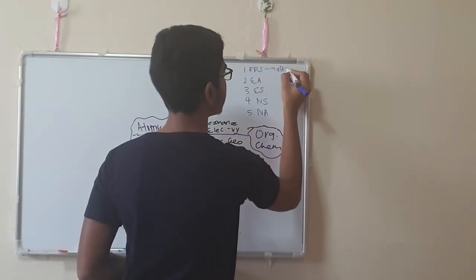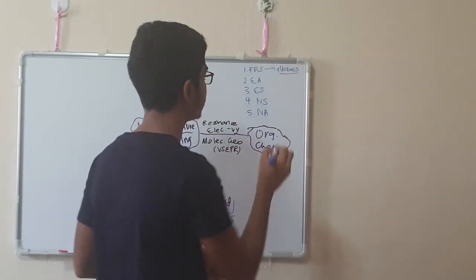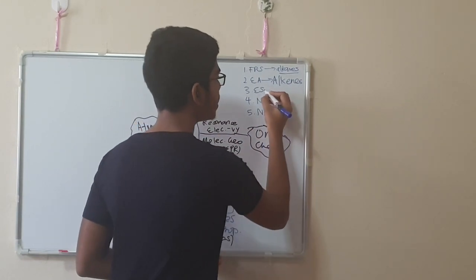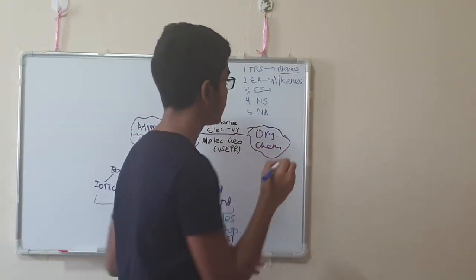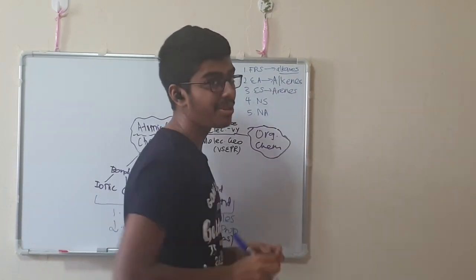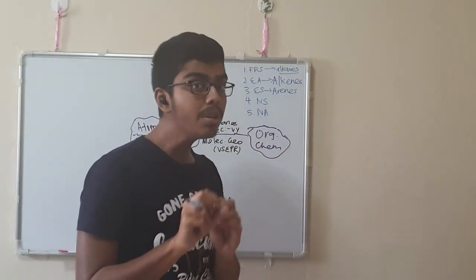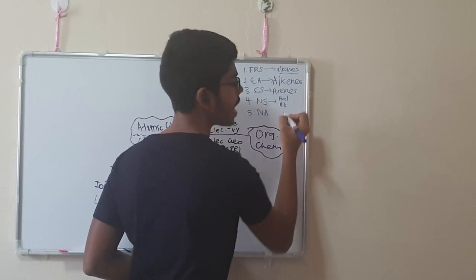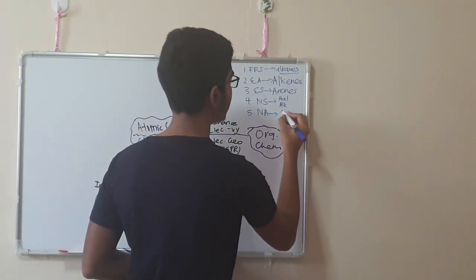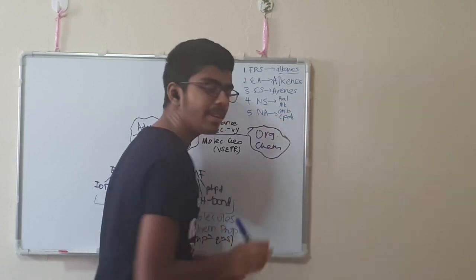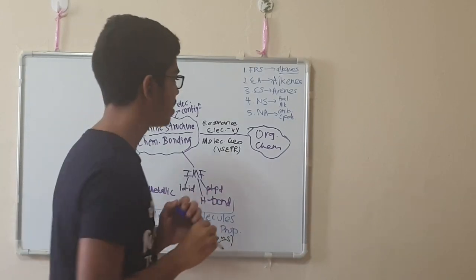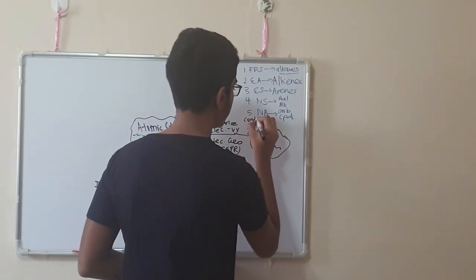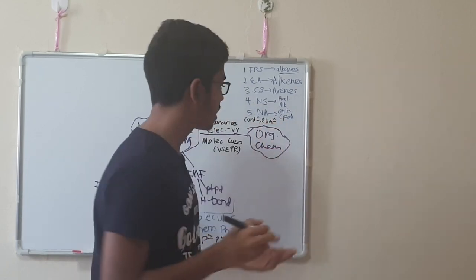Free Radical Substitution is in the topic of alkanes. Electrophilic Addition comes in the topic of alkenes. Electrophilic Substitution comes in the topic of arenes, where you'll be dealing with benzene rings. Nucleophilic Substitution — not national service — is covered in halogenoalkanes. Nucleophilic Addition is covered in carbonyl compounds. The remaining organic topics involve other reactions like condensation and elimination.